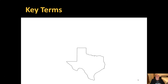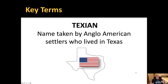Our next key term is 'Texian.' Today here in the United States we call ourselves Texans, but the Anglo Americans who came to Texas in the 1820s and 1830s when it was controlled by Mexico mostly settled on the term 'Texian.' So Texian is the proper term for an Anglo American settler who came to Texas.